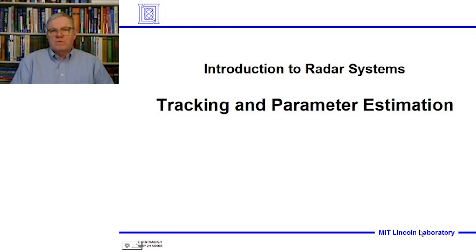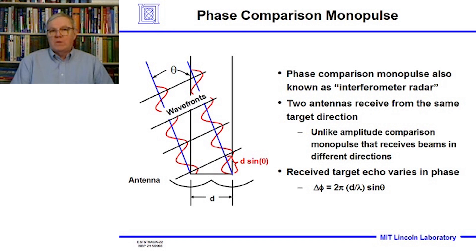We move on to Part 2 of the Tracking and Parameter Estimation lecture of the Introduction to Radar Systems course — this is Lecture 9, Part 2. When we finished Part 1, the last subject we discussed was amplitude comparison monopulse techniques. Now we're going to talk briefly about phase comparison monopulse techniques for measuring angle.